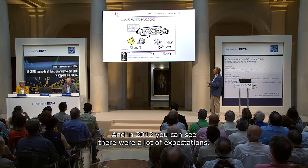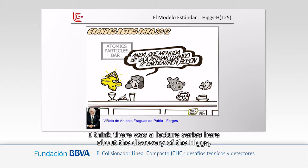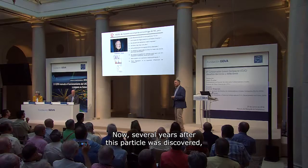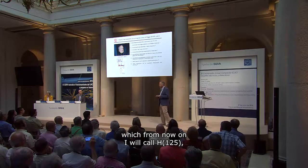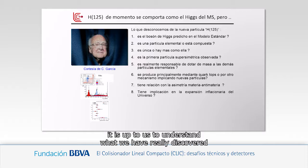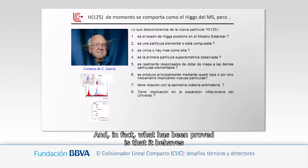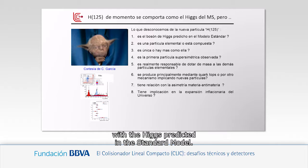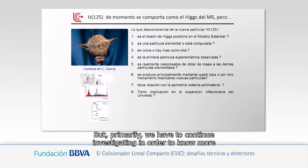In 2012 there was a lot of expectation and the discovery was followed in all the media. Now, several years later, this particle — which I will call the Higgs H125 — needs to be understood properly. What has been established is that it is very similar to what is expected for the Higgs predicted in the standard model, but we have to continue investigating and learning more from what this particle tells us.